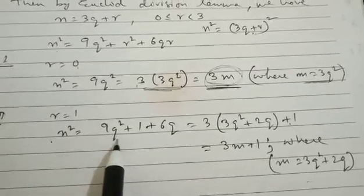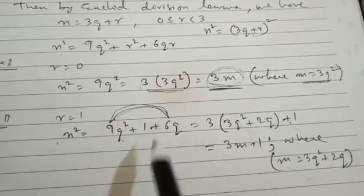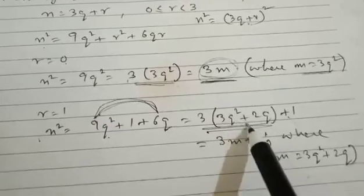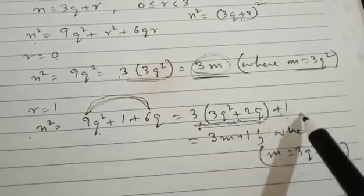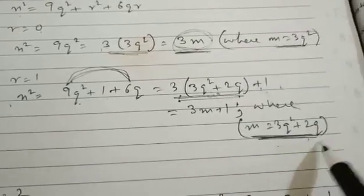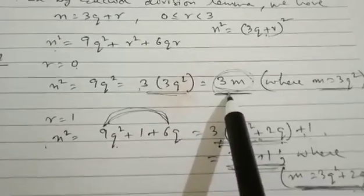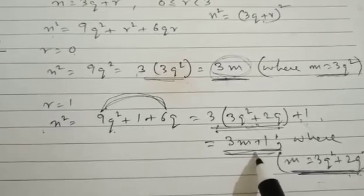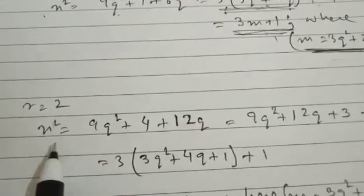Then case number 2: when r equals 1, we get n squared equal to 9q squared plus 1 plus 6q. Taking 3 common between the first and last terms, the format becomes 3 into bracket 3q squared plus 2q, plus 1. Taking m as 3q squared plus 2q, the format comes to 3m plus 1. So in case one we got 3m and in case two we are getting 3m plus 1.